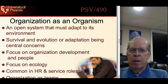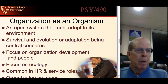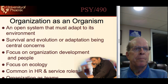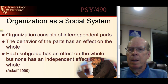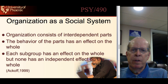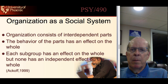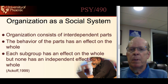This metaphor is common for HR and service roles, as well as organization as teams. Next in the evolution was the organization as a social system. In this metaphor, the organization consists of interdependent parts, and the behavior of the parts has an effect on the whole. Each subgroup has an effect on the whole, but none has an independent effect. This came from ACOL.